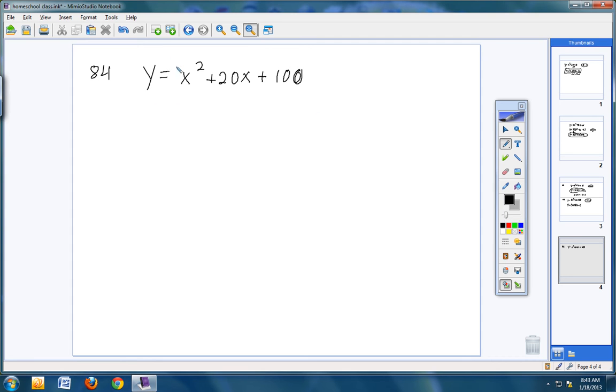Notice we do have a lead coefficient of 1, so it's the easy kind. I think we'd have positive 10 and positive 10, because 10 times 10 is 100 and 10 plus 10 is 20. So the factorization would look like this.